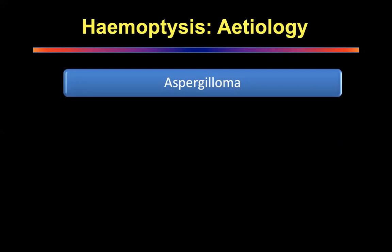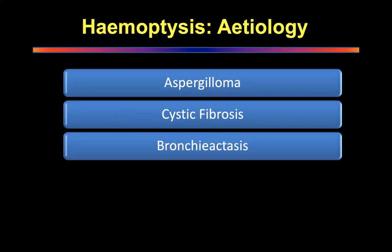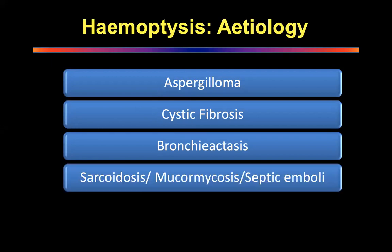Other causes of hemoptysis include aspergilloma, cystic fibrosis, and bronchiectasis — which is very common in our country. Post-inflammatory diseases secondary to smoking, tuberculosis, or other respiratory infections lead to bronchiectatic changes in the airway, resulting in tortuosity and engorgement of the bronchial arteries, which may actually rupture.